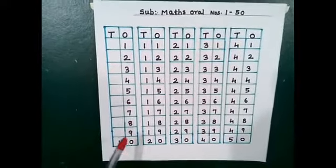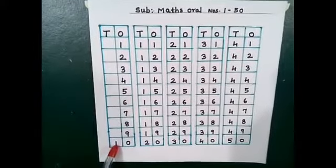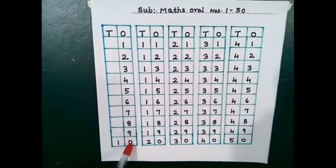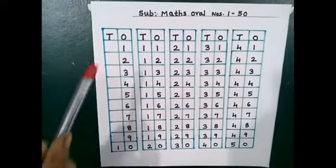Now 10 is a 2 digit number. So 1 you have to write in the tens column and 0 you have to write in the ones column. Now 10 to 50 are 2 digit numbers.